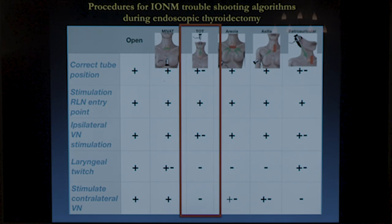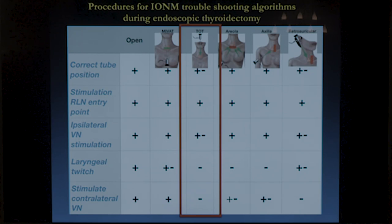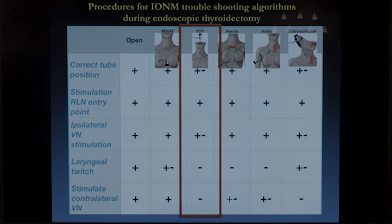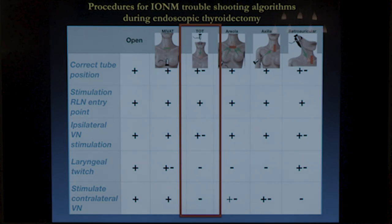For example, if you have nasotracheal intubation and the field is closed, you have to ask the anesthesiologist to reposition the tube. If you need to stimulate the contralateral vagal nerve, it requires additional dissection — maybe 20 or 30 minutes to dissect it. Laryngeal twitch evaluation is possible but very difficult; you can see something with the endoscope, but it's extremely difficult with the cranial-to-caudal view.